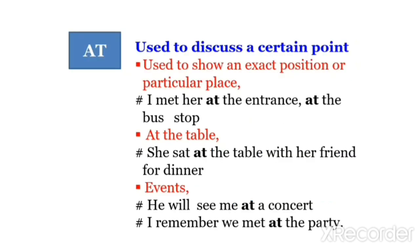सबसे पहले हम बात करेंगे 'at' की। At is used to discuss a certain point. एक particular point पर जब कोई चीज़ या व्यक्ति located है, तब हम 'at' का use करते हैं। At is used to show an exact position or a particular place — किसी भी व्यक्ति या चीज़ की exact position या किसी particular specific place को बताने के लिए 'at' preposition का use किया जाता है।